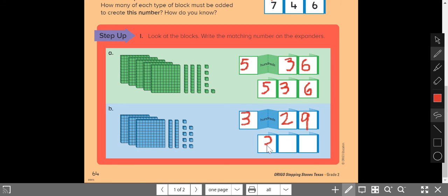So if I write it down here, it's 3, 2, 9. Read that number with me. 329.